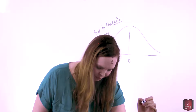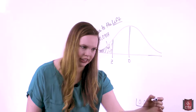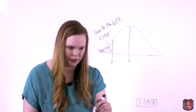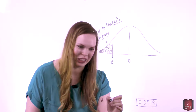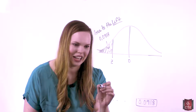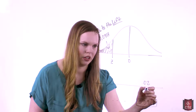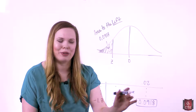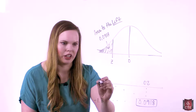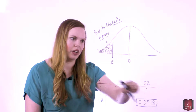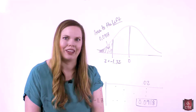The value 0.0918 is going to appear somewhere in the table. When you find it, you look at what row it's in — this one happens to be in the negative 1.3 row. We know it's negative because it's to the left of zero, just like a number line. Then you look at what column it's in, and this one happens to be in the 0.02 column. So the z-score is equal to negative 1.32.